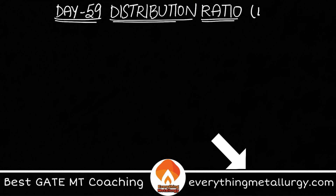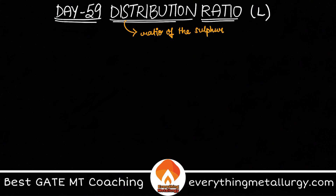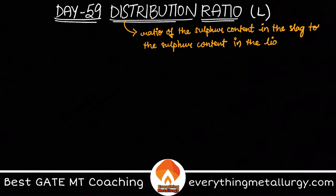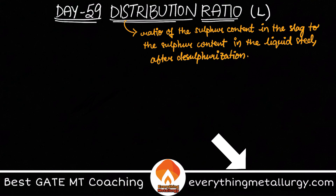The distribution ratio is usually denoted by L. It is the ratio of the sulfur content in the slag to the sulfur content in the liquid steel after secondary refining, that means after desulfurization. It is used for sulfur and phosphorus — it is the ratio of the weight percentage of sulfur in the slag to the sulfur content left in the liquid steel after the desulfurization treatment.